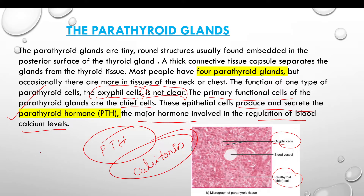Parathyroid hormone — the gland is a tiny round structure embedded in the posterior surface of the thyroid gland. There are usually four parathyroid glands. The chief cells of the parathyroid gland produce parathyroid hormone, which functions to regulate calcium levels in the blood.